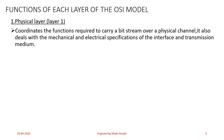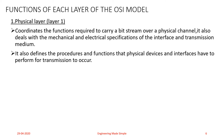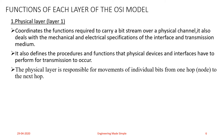The Physical layer also deals with the mechanical and electrical specifications of the interface and the transmission media. It defines procedures and functions that physical devices and interfaces have to perform for transmission to occur. Most importantly, the Physical layer is responsible for the movement of individual bits from one hop node to the next hop.